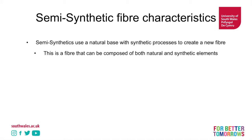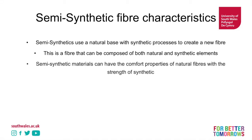The fiber can be composed of both natural and synthetic elements. For example, some cellulose which comes from plants can be treated with chemicals — which might be derived from petrochemicals or developed synthetically — to produce a new fiber. Semi-synthetic materials have the comfort properties of natural fibers with the strength of synthetic fibers. They usually have good drape.